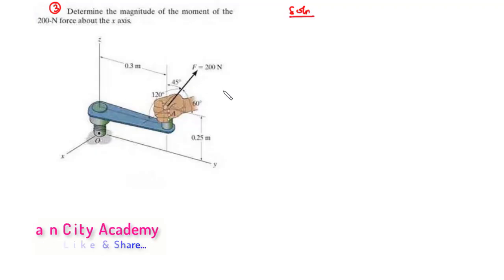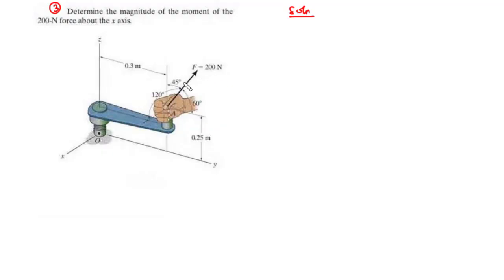For this question, we have F to be 200 newtons, and we have angles formed between F and the x-axis, F and the y-axis, and F and the z-axis. We have magnitude of F to be 200 newtons, and angles alpha, beta, and gamma formed between the force and the respective axes. Let alpha be the angle formed between F and the x-axis, so that is 120 degrees.